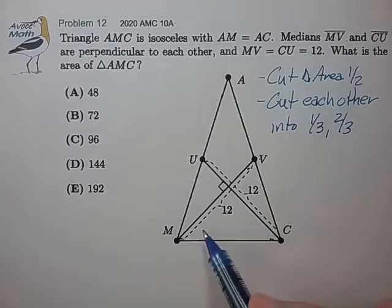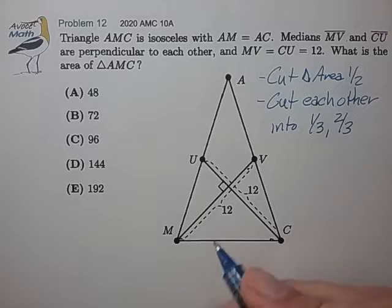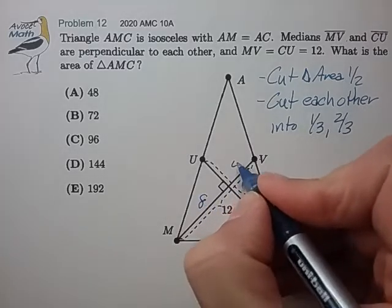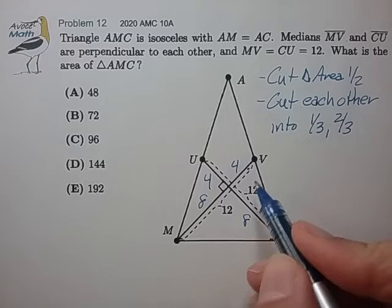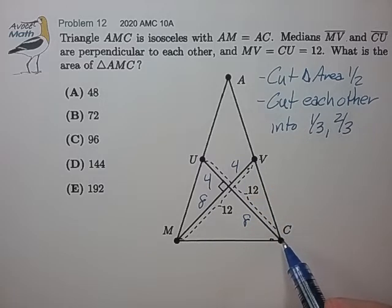So from these two facts we can quickly pick out that these medians are divided into lengths 8 and 4, and the area of MVC is pretty easy to calculate.